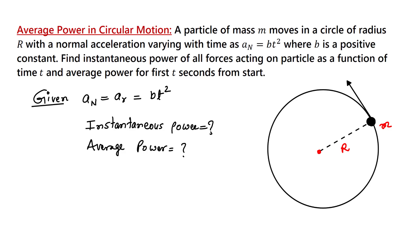Hello friends. This problem is about the calculation of average power in circular motion. A particle of mass m moves in a circle of radius r with a normal acceleration varying with time as a_n equals bt squared, where b is a positive constant. We have to find the instantaneous power of all forces acting on the particle as a function of time t.